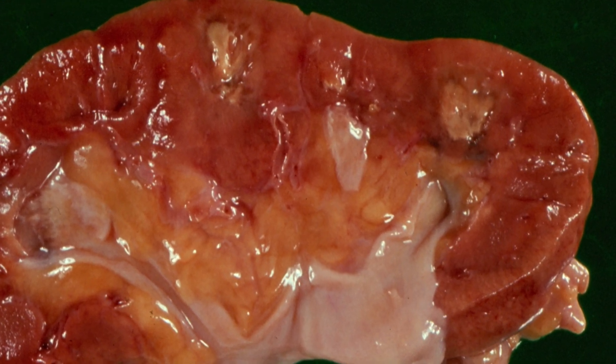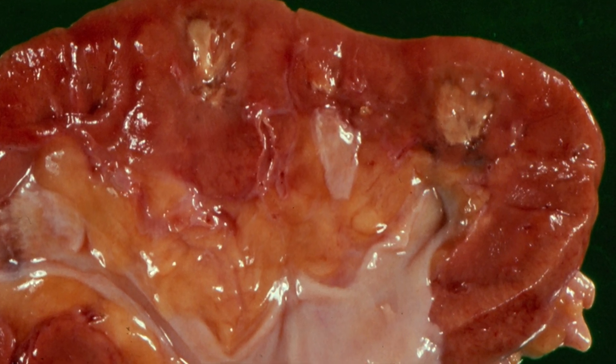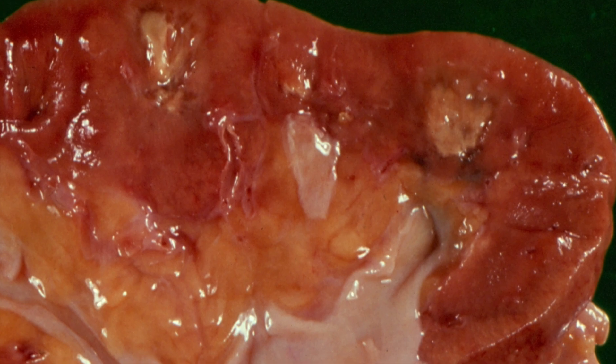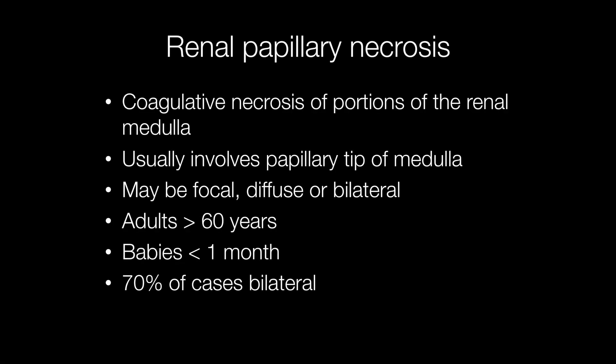Here is a slice of kidney showing features of renal papillary necrosis. This is coagulative necrosis of portions of the renal medulla, and it usually involves the papillary tip of the medulla. In 70% of cases it affects both kidneys. Renal papillary necrosis usually occurs in adults over the age of 60, although it can occur in babies that are usually less than one month old.